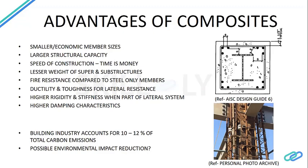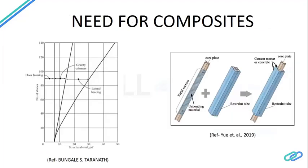A question to consider: is composite construction advantageous in the current environment in terms of environmental benefits? The building industry accounts for 10 to 12 percent of carbon emissions due to cement usage. For one ton of cement produced, approximately one ton of CO2 is produced. Steel also has high embodied carbon — potentially higher than concrete. However, one advantage is that steel can be reused: scrap steel can be re-rolled and reused in building applications. So this has both advantages and drawbacks in terms of carbon emissions.